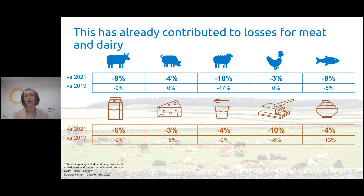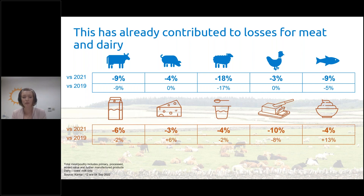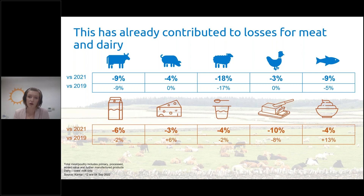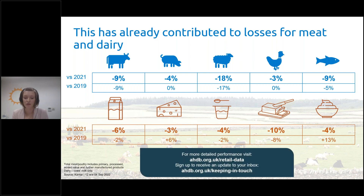So how do all these factors net out for top-line meat and dairy performance? Total food and drink volumes within retail were down 4% versus 2021 and 7% versus 2019. Categories hardest hit within meat are lamb and butter within dairy. However, there are positives in the long term, with cheese and cream both in growth when compared to pre-COVID, and pig meat and chicken in line with pre-COVID volumes. This is very top-line, and we have more detailed data on our website where you can look at specific timeframes, cuts and products.